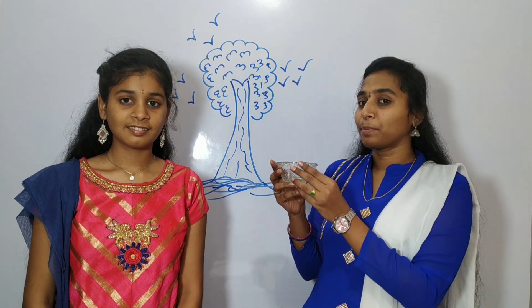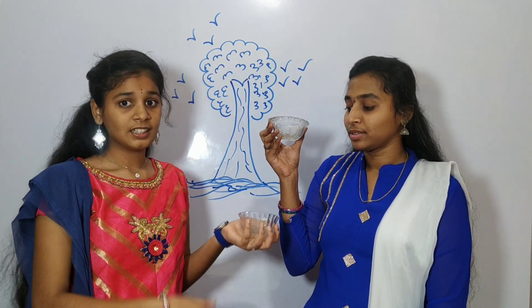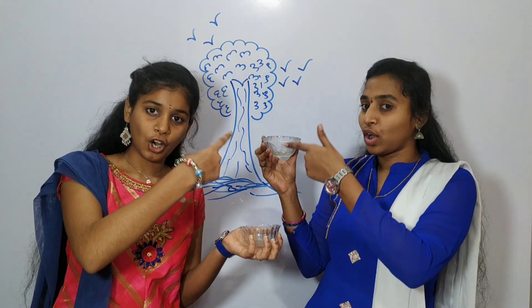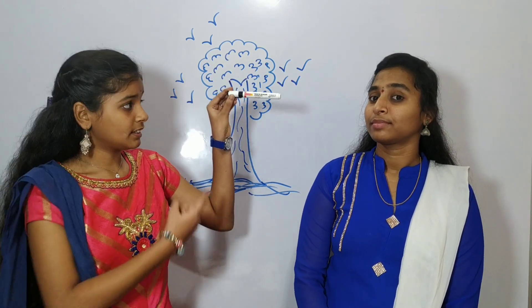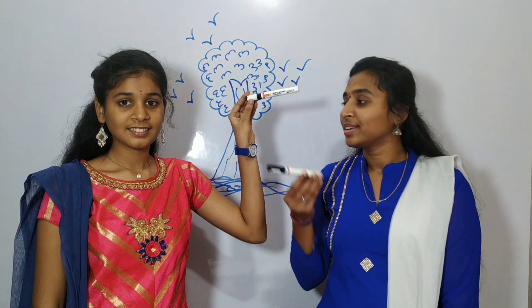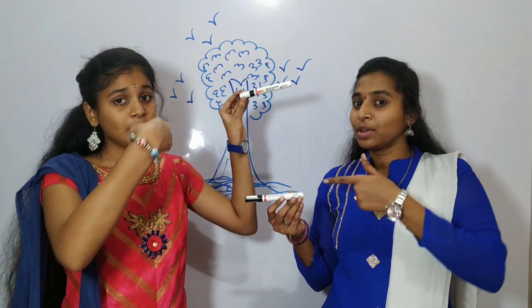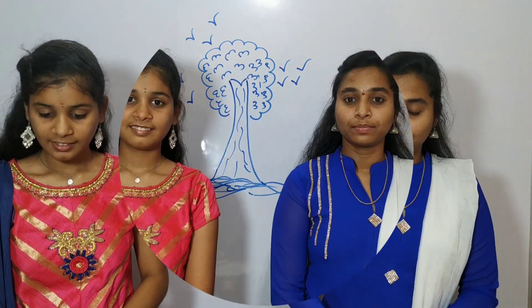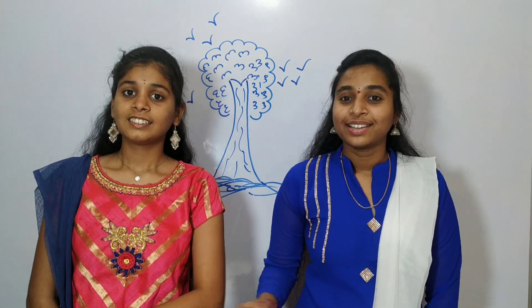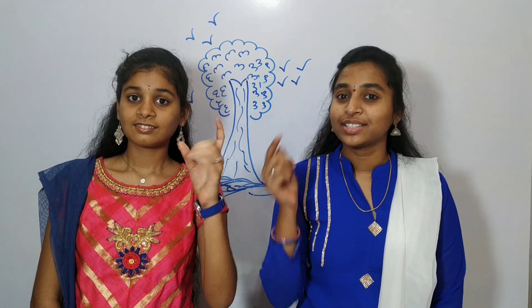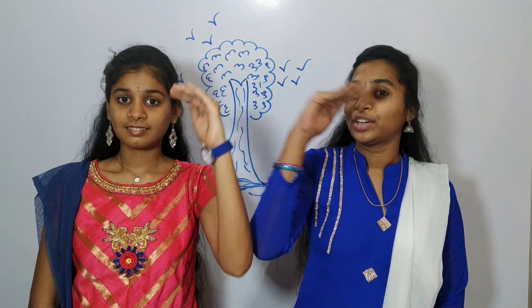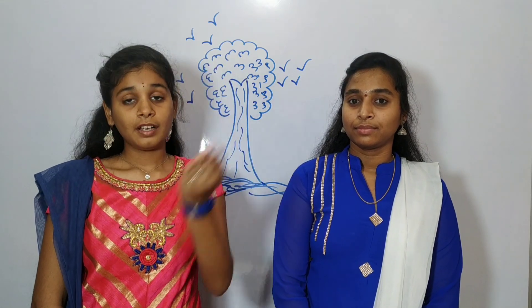This is a cup which is at the top, and this is at the bottom. Top, bottom. Hey kids, there is a small activity for you. Try to identify any five things in your home which are at top and bottom. Now we have completely understood the topic top and bottom.